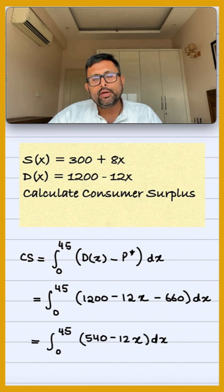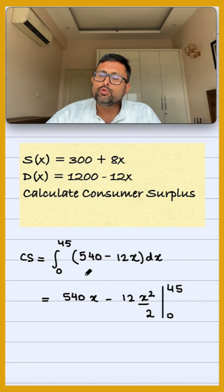Simplifying, we get the integral of 540 - 12x dx. Then, using the rules of integration...